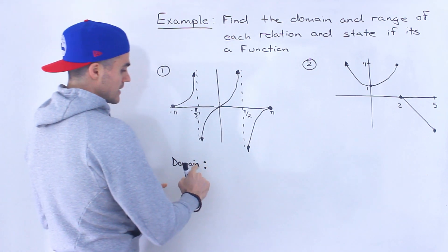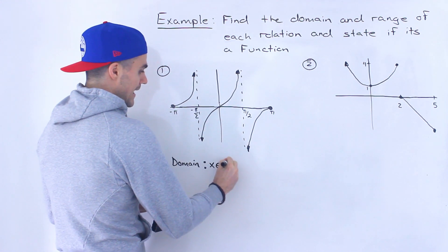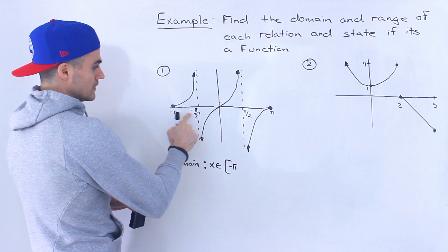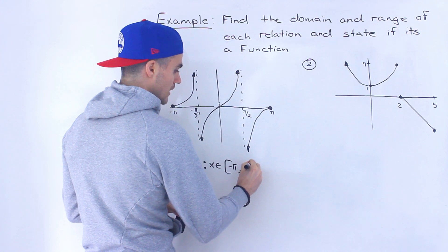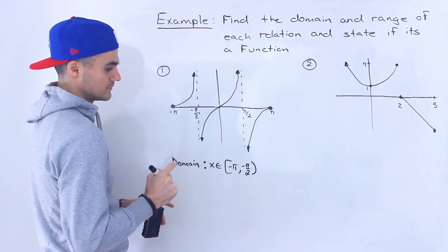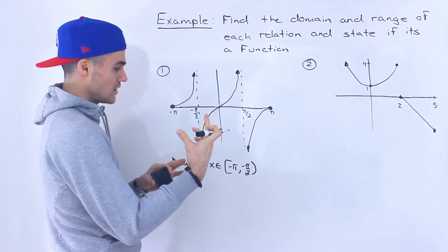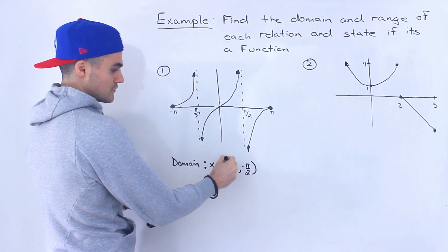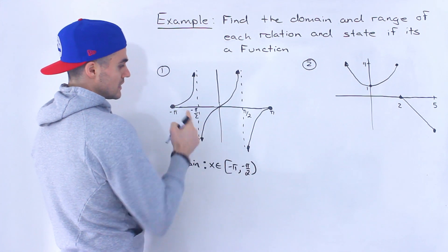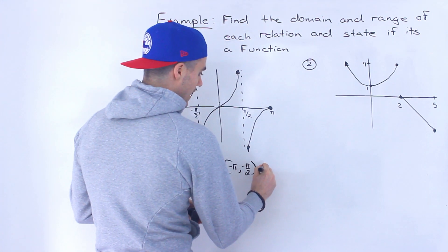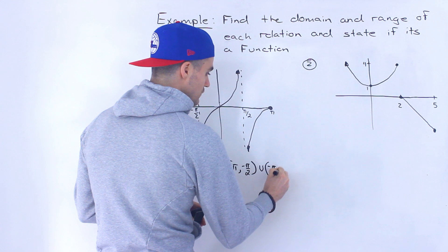So we can say x is an element from negative pi to negative pi over two, but it's not inclusive of negative pi over two, so we close that off with a round bracket. It is inclusive of negative pi because there is a solid dot there, so we use a square bracket. It goes to negative pi over two but is not inclusive because there's a vertical asymptote there. Then we're also going from negative pi over two to positive pi over two, not inclusive of those ends.